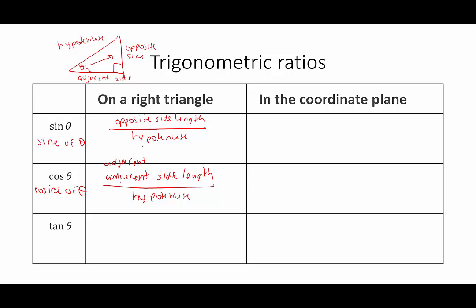The last of the three commonly used functions is tangent, spelled tangent of theta. We can look at it one of two ways: it's the ratio of sine of theta to cosine of theta, which means we look at opposite over adjacent. The hypotenuse denominators cancel out in the jumbo fraction, leaving us with opposite over adjacent.